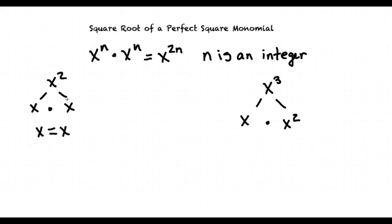x cubed, on the other hand, is not. If you break down its factors, its factors are x and x squared. x is not equal to x squared. So therefore, x cubed is not a perfect square.